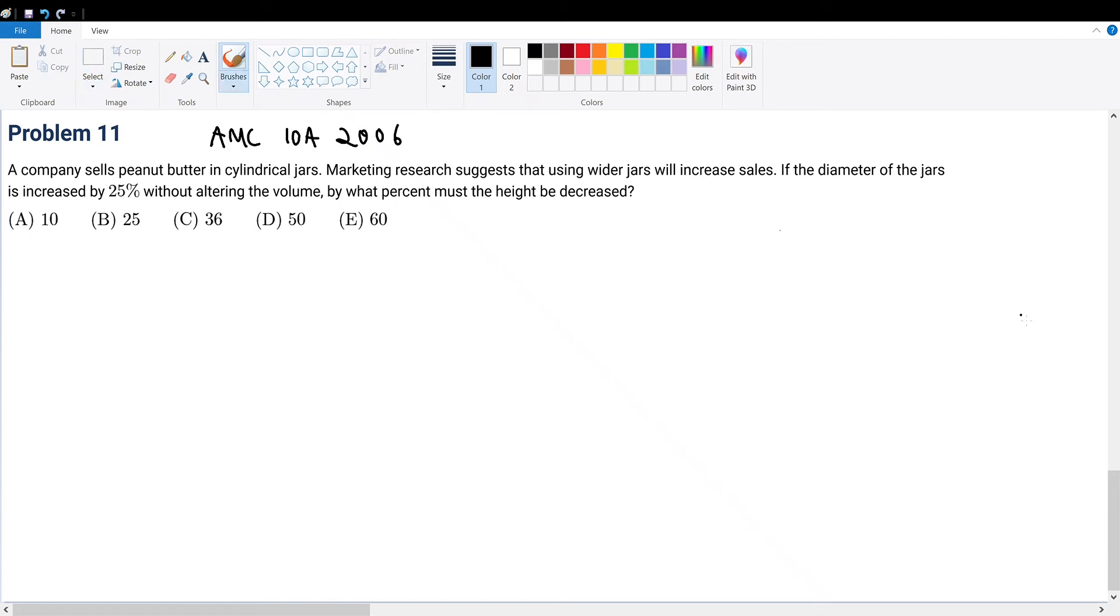AMC 10 in 2006, problem 11. A company sells peanut butter in cylindrical jars and marketing research shows that if you increase the diameter, you'll get more sales.